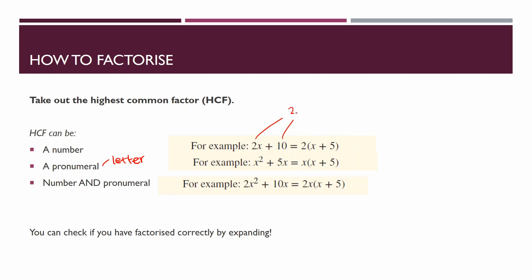So if I take 2 out of both expressions, I divide each term by 2. 2 divided by 2 gives you 1x, but we don't write the 1 because it's implied. To get the 5, you do 10 divided by 2. That's how you work out what goes inside the brackets — you divide each part of the expression by the HCF.